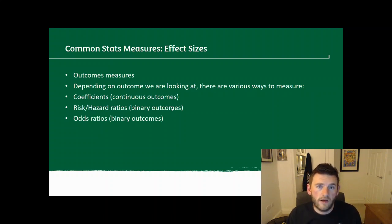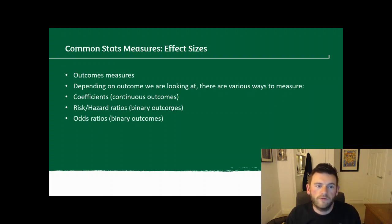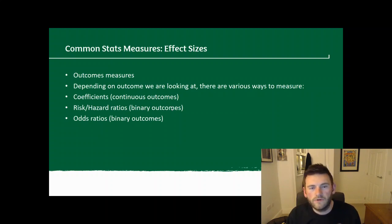Some common effect measures you're likely to come across in reading statistical papers include coefficients, which is where you have continuous outcomes. These can have slightly different names in the literature depending on what statistical models have been run, but typically coefficients tell you something about those continuous interval or ratio measures and their effects. If you have more categorical data, particularly those with binary outcomes — which are probably the most common categorical outcomes — categorical variables are much more likely to be predictors in the model rather than the outcomes of the model.